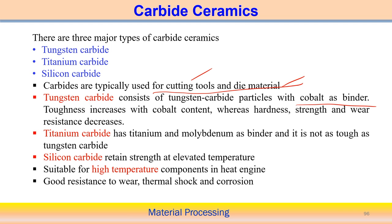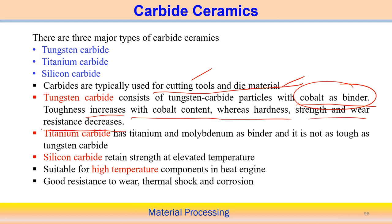Tungsten carbide has cobalt working as a binder, and toughness increases with cobalt content. When cobalt content increases, toughness increases — but hardness, strength, and wear resistance actually decrease with increasing cobalt. Depending upon the required properties, we can optimize the cobalt content as a binder in tungsten carbide.